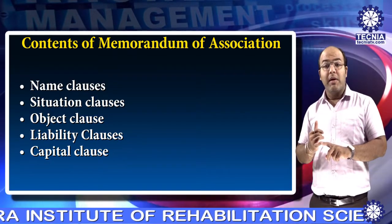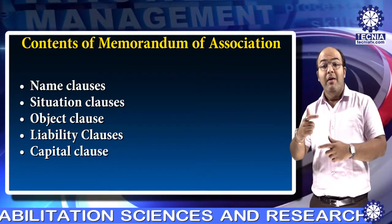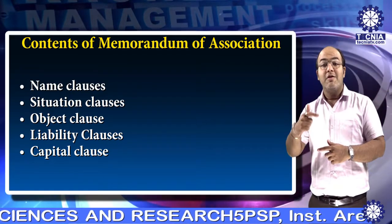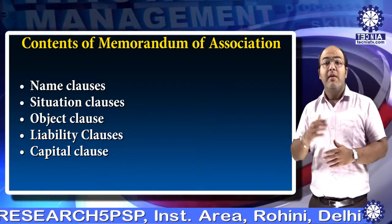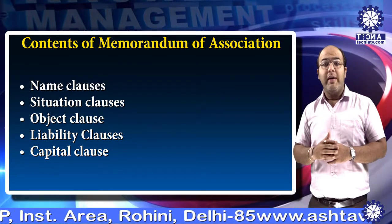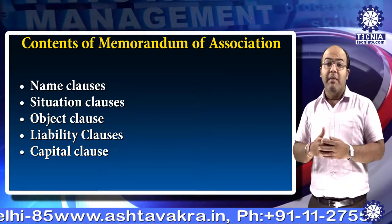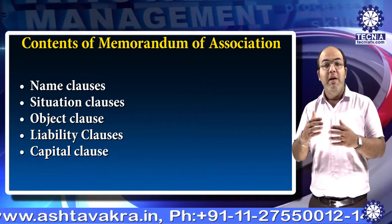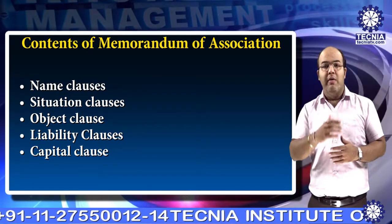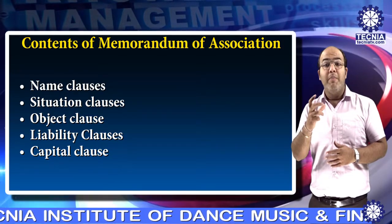The name clause contains the name of the company. The proposed name should not be identical or similar to the name of another existing company. The second clause is the situation clause. This clause contains the name of the state in which the registered office of the company is to be situated.